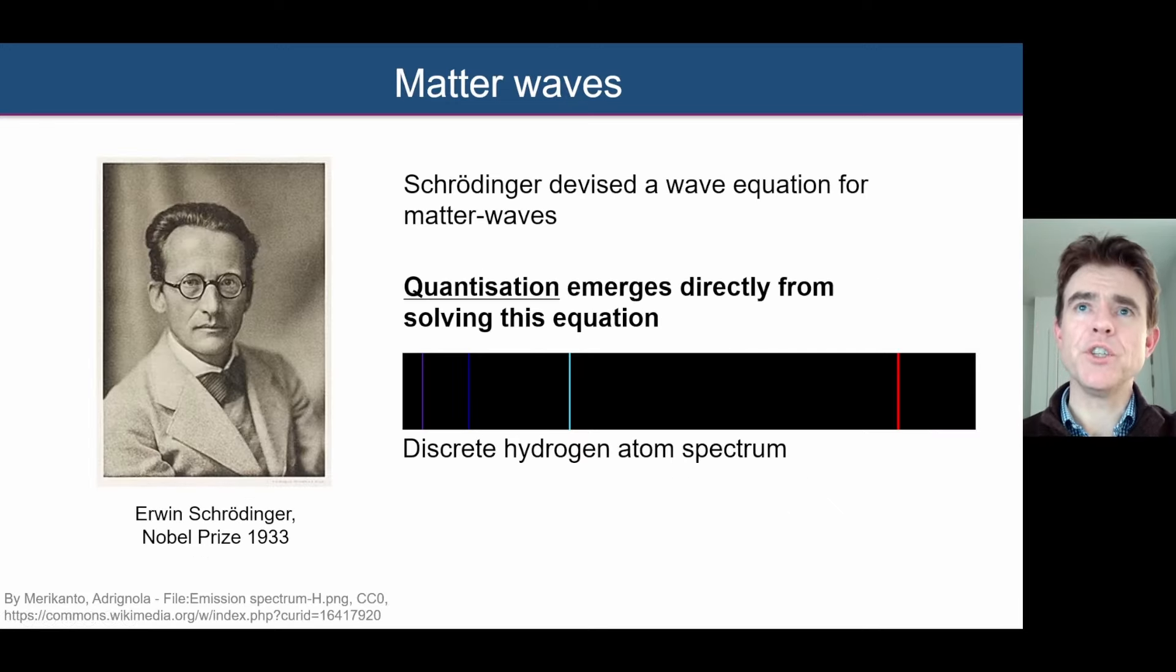So Schrödinger then devised a wave equation for these matter waves, for these particle waves. The interesting fact is that when you solve Schrödinger's equation, then quantization, for example, of energy levels in a hydrogen atom, whereby we see these discrete wavelengths of light that are emitted, the quantization of the hydrogen atom is directly explained by solving the Schrödinger equation.